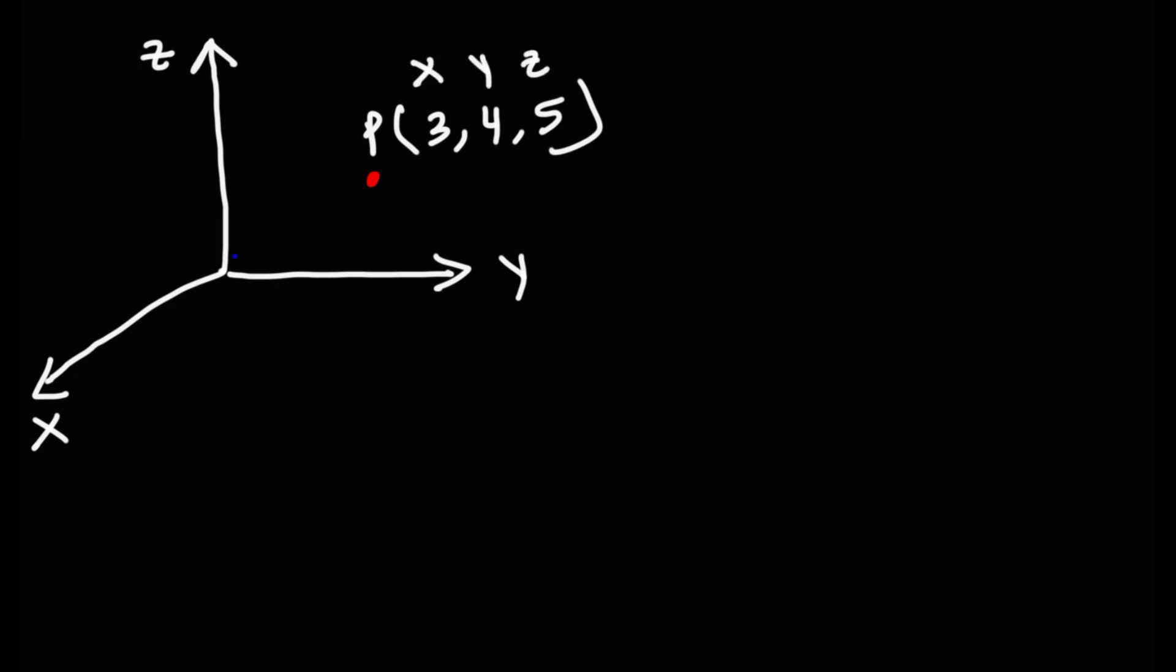So to get to that point starting from the origin we need to travel three units along the x direction and then four units along the y direction and then up five units along the z direction. So here is our position vector r. So it's going to be 3i plus 4j plus 5k.